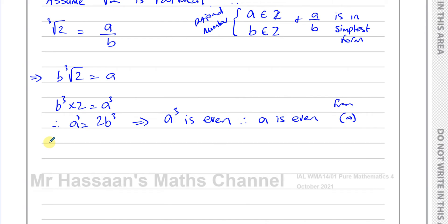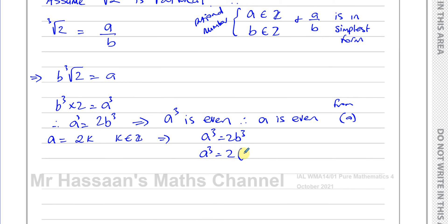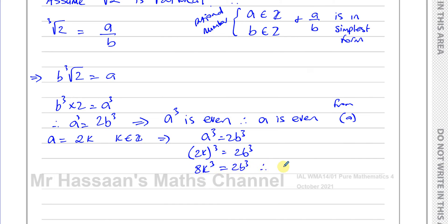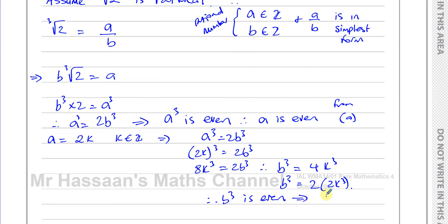If a is even, then a can be expressed as 2k, where k is an element of the integers. Therefore, we know that a cubed equals 2b cubed, so we can substitute a with 2k. We have (2k) cubed equals 2b cubed, which gives 8k³ = 2b³. Therefore b cubed equals 4k³, which is the same as saying b cubed equals 2 times (2k³). So we know that b cubed is even. And if b cubed is even, then b is even.